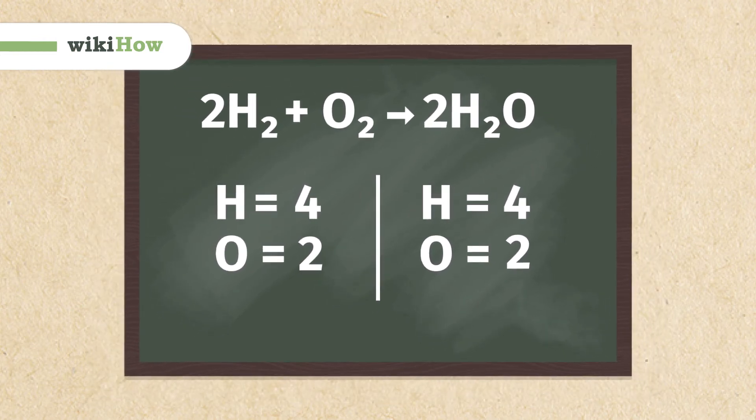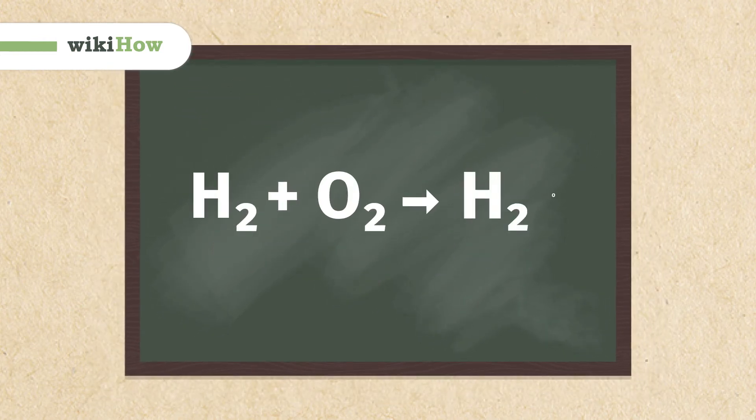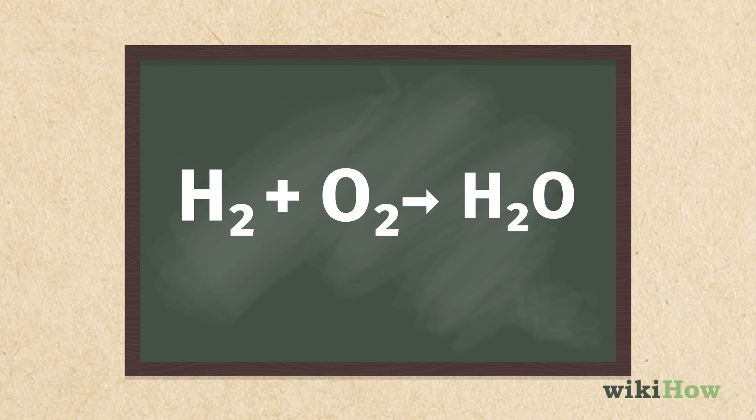To balance a chemical equation, first write out your given formula with the reactants on the left of the arrow and the products on the right.